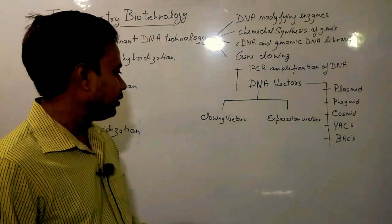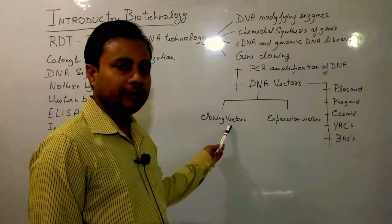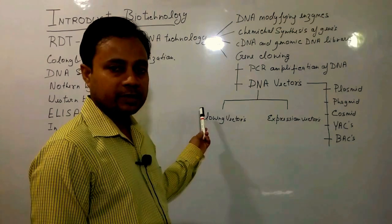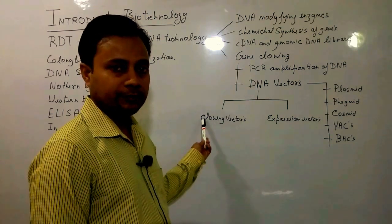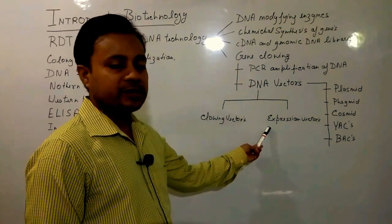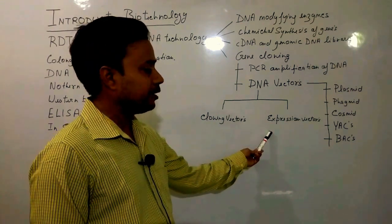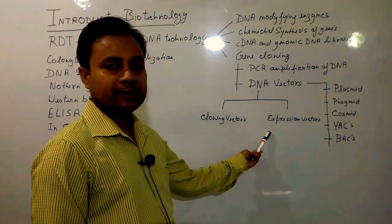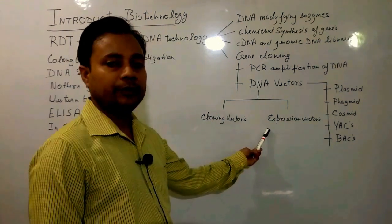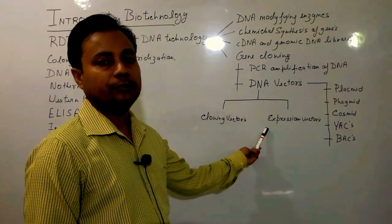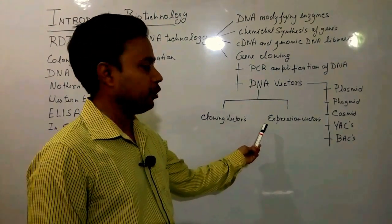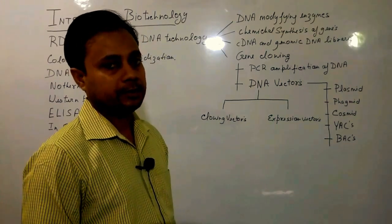Cloning vectors are used to clone DNA molecules for the purpose of sequencing and screening of positive molecules. Expression vectors are specialized vectors containing specific DNA sequences responsible for the expression of gene molecules in organisms such as plants and animals.